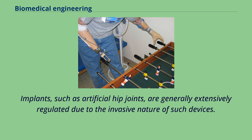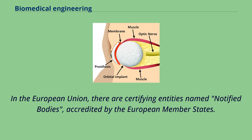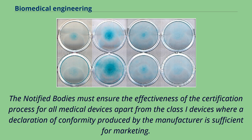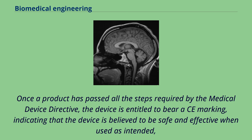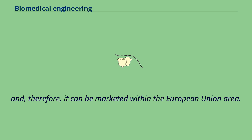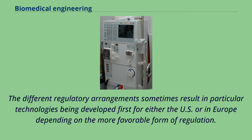Implants such as artificial hip joints are generally extensively regulated due to the invasive nature of such devices. In the European Union, there are certifying entities named notified bodies, accredited by the European member states, which must ensure the effectiveness of the certification process for all medical devices apart from class I devices. Once a product has passed all required steps, the device is entitled to bear a CE marking, indicating that the device is believed to be safe and effective when used as intended, and can be marketed within the European Union. Different regulatory arrangements sometimes result in particular technologies being developed first for either the US or Europe depending on the more favorable form of regulation.